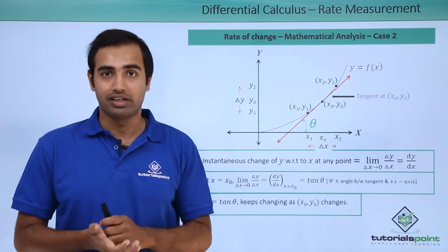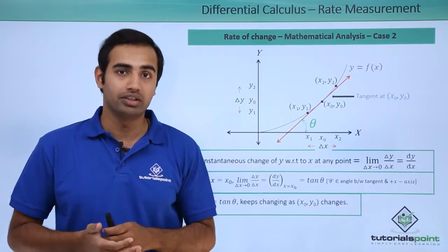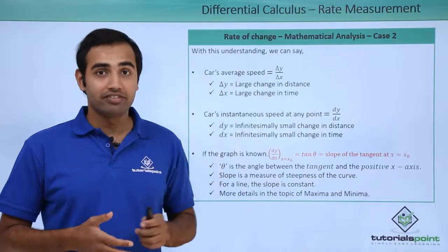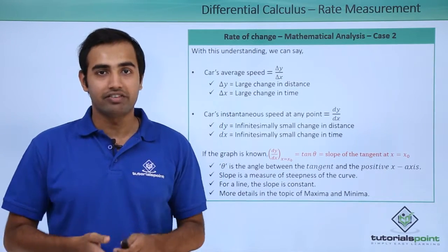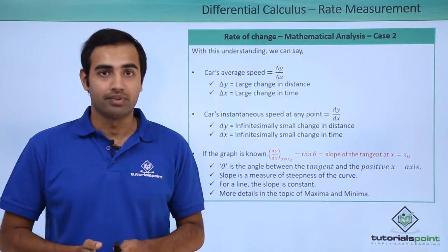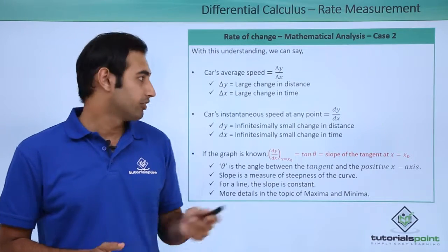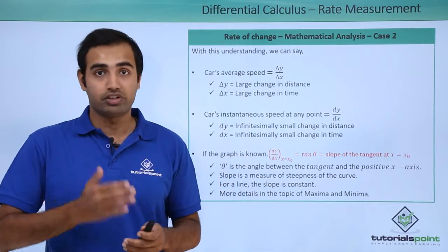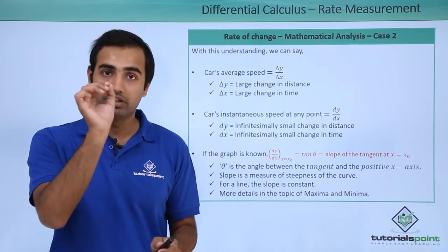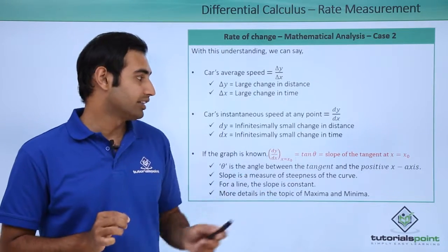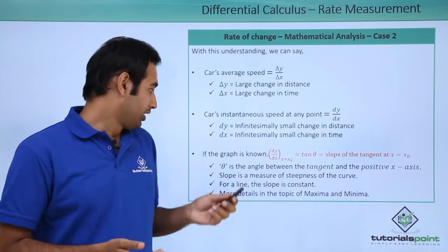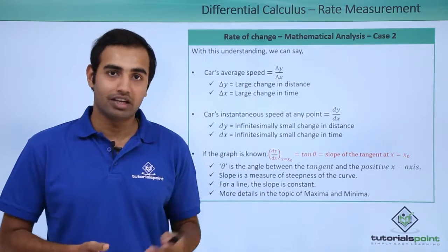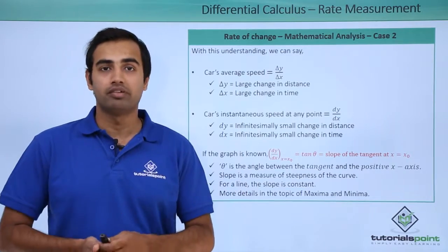Summarizing what we just learned: the car's average speed is given by Δy/Δx, where Δy is a large change in distance and Δt is a large change in time. The instantaneous speed is given by dy/dx — a small change in y upon a small change in x. If the graph of motion is known, dy/dx at x = x0 gives the instantaneous speed, which also equals tan(θ), the slope of the tangent drawn at x = x0. Slope is the measure of steepness of a curve; for a straight line the slope is constant. The topic of maxima and minima will explain these ideas further.